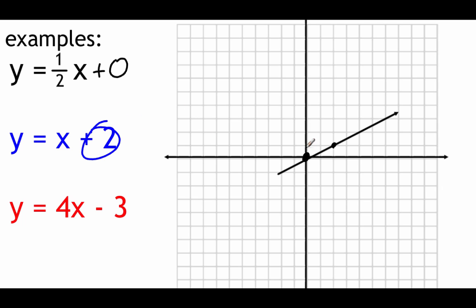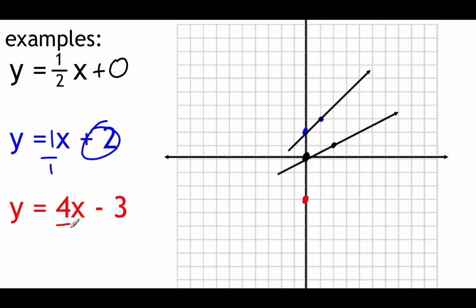We've got a slope of one half — thinking about slope as rise over run, we go up one space and to the right two spaces. There are our two dots, and all we have to do is draw a straight line. For y equals x plus two, the y-intercept is two, so I go up two spaces and put my first dot. There's no number in front of x, so it's an implied one — rise over run means up one over one. For y equals 4x minus 3, the b value is minus 3, so I go down three spaces for my first dot. Slope is 4, so up four spaces and over one space, then draw in the line.